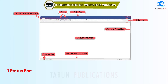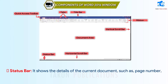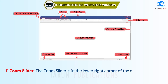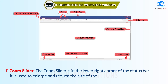Status Bar: it shows the details of the current document such as page number, number of pages, lines, words, etc. Zoom Slider: the zoom slider is in the lower right corner of the status bar. It is used to enlarge and reduce the size of the window quickly and easily.